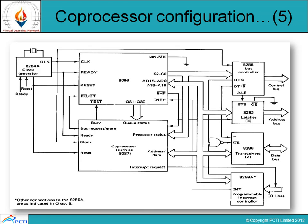Here is the coprocessor configuration diagram. We have the clock generator, different memory locations, the control bus, address bus, data bus, and IR lines. Here, this one is the interrupt request.